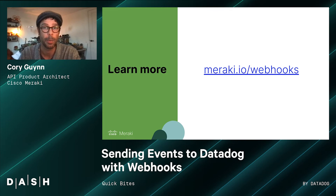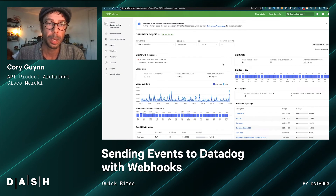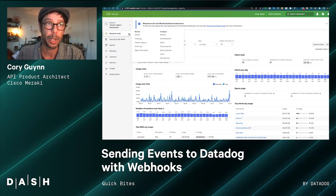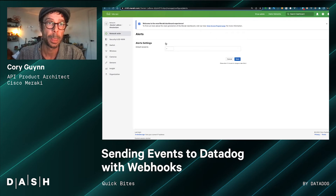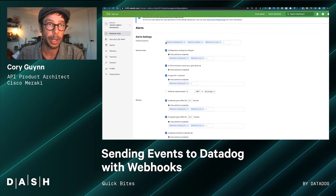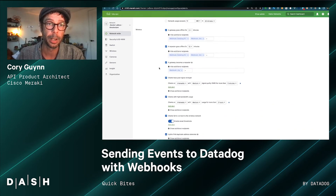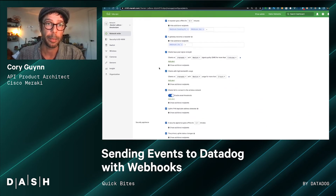With that, we'll pop over to a demo so you can see how it all works. Here we are in the Meraki dashboard, taking a look at this network. What we want to do is set up our alerts so that we can send them to Datadog. There are a number of alerts that you can configure and assign based on certain thresholds.